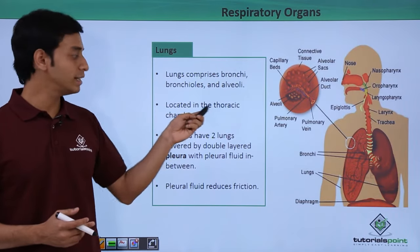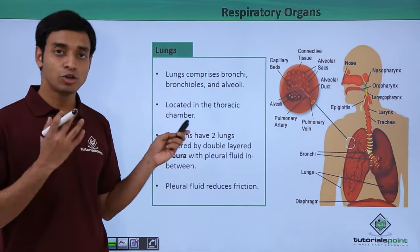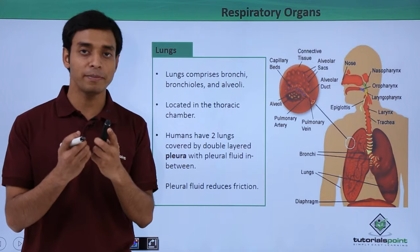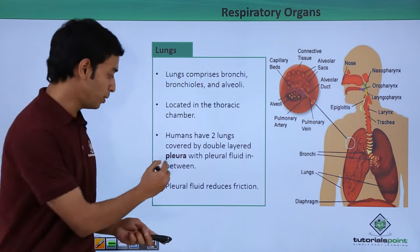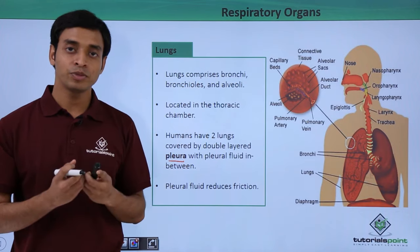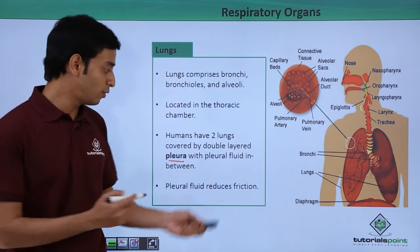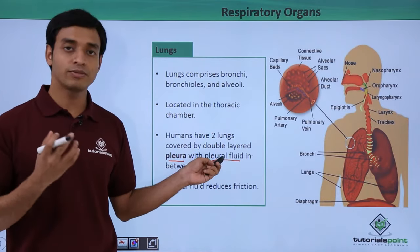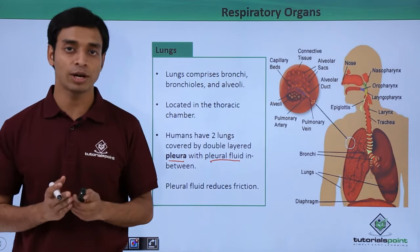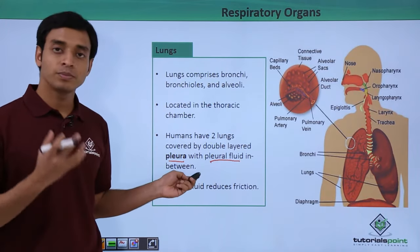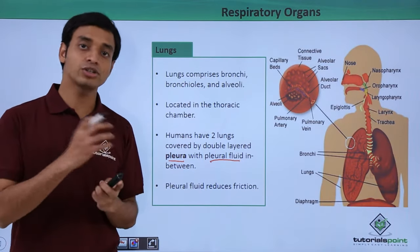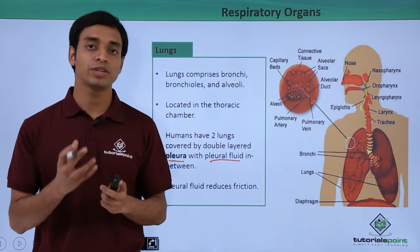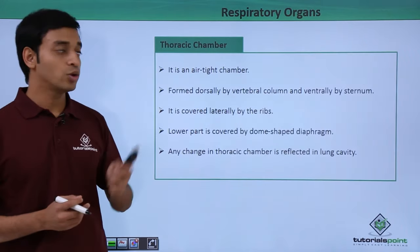All parts of the respiratory system — bronchi, bronchioles, and alveoli — together make up the lungs. These are located in the thoracic chamber. Each of the two lungs is covered by a double membrane layer known as the pleura. To avoid friction between the two layers, there is a fluid called pleural fluid, which also reduces friction between the lungs and the membrane.